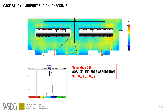80% coverage is a lot of the ceiling — a lot of material, expensive to buy and expensive to install. But it is really, really good for speech intelligibility. You see there are even spots going to orange or red on the map. This is nearly concert hall quality, which is certainly not needed in an airport.